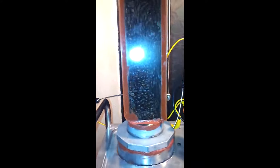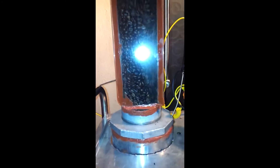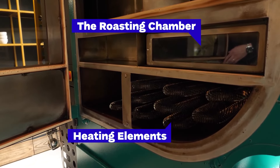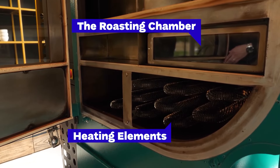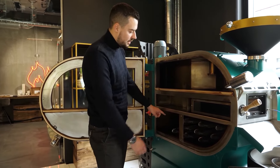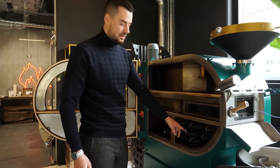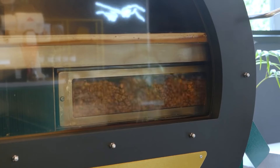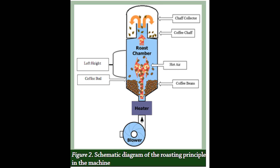A fluid bed coffee roaster is a type of coffee roaster that uses hot air to roast the coffee beans. Beans are placed in a chamber and hot air is blown through them, causing them to roast evenly. This method is different from traditional drum roasters, which use direct heat to roast the beans. The fluid bed roaster method is considered to be a more efficient and consistent way of roasting coffee beans.